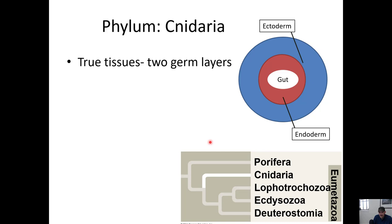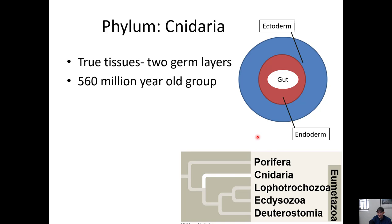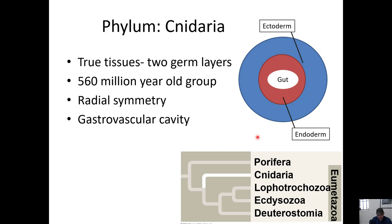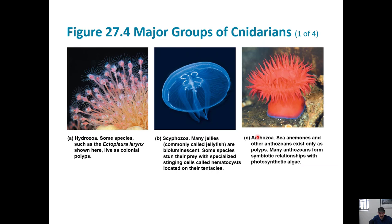We'll end with phylum Cnidaria for this video. Phylum Cnidaria has true tissues. When they're embryos, they have two layers of cells: the outer layer is called the ectoderm, and the inner layer is called the endoderm. They're called germ layers because they're early layers found in the embryo, and they develop into body tissues. They have radial symmetry and a gastrovascular cavity — a mouth that is also the anus. They secrete digestive enzymes into that cavity, digest food, and then absorb it via endocytosis.